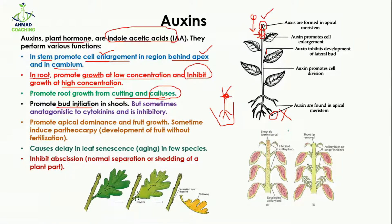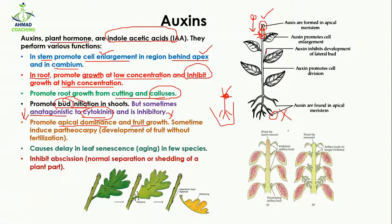Auxins promote bud initiation in the shoot, meaning they start the formation of a bud. However, they can be antagonistic to cytokinin — if cytokinin is present, auxins work against it and inhibit or stop bud formation. Antagonistic means they work opposite to cytokinin.